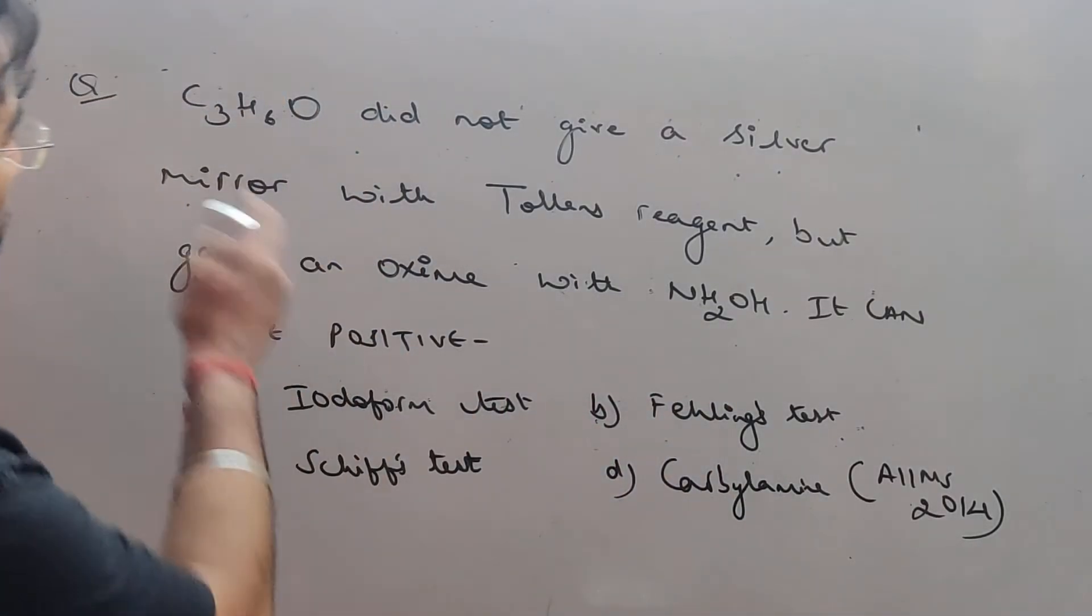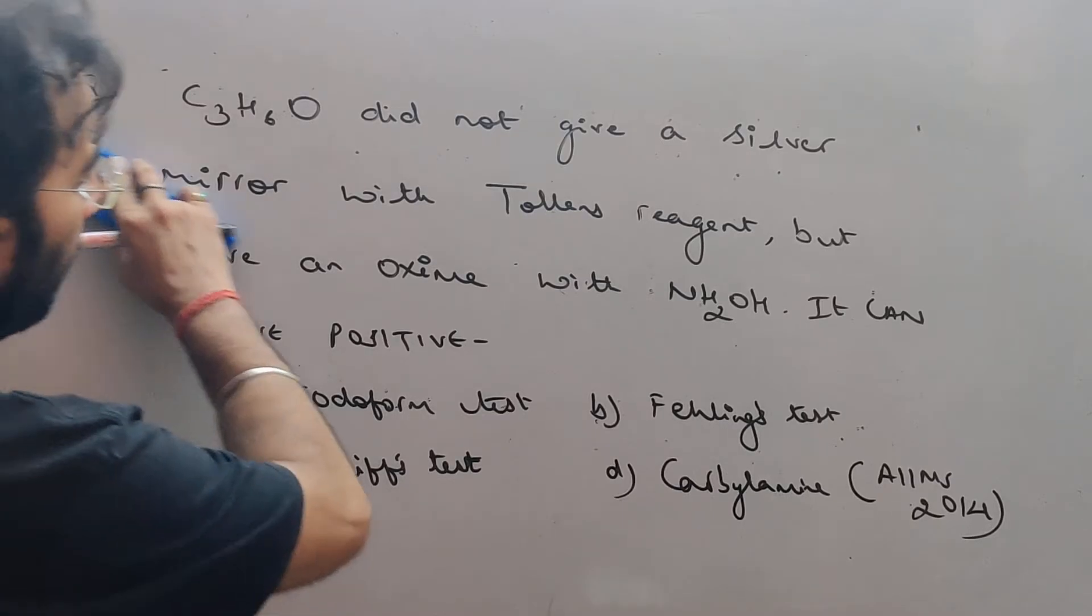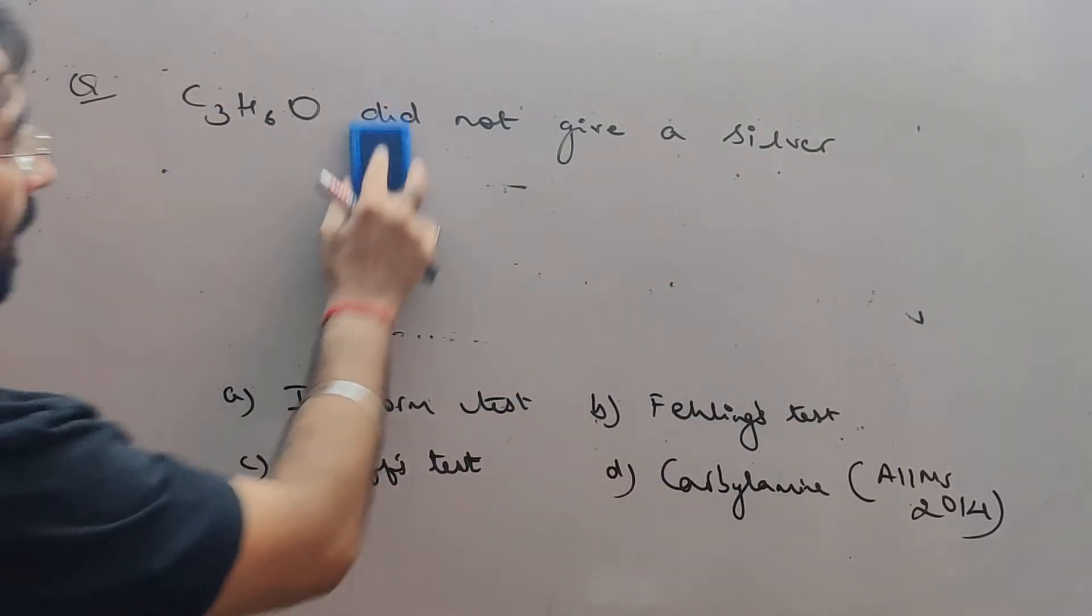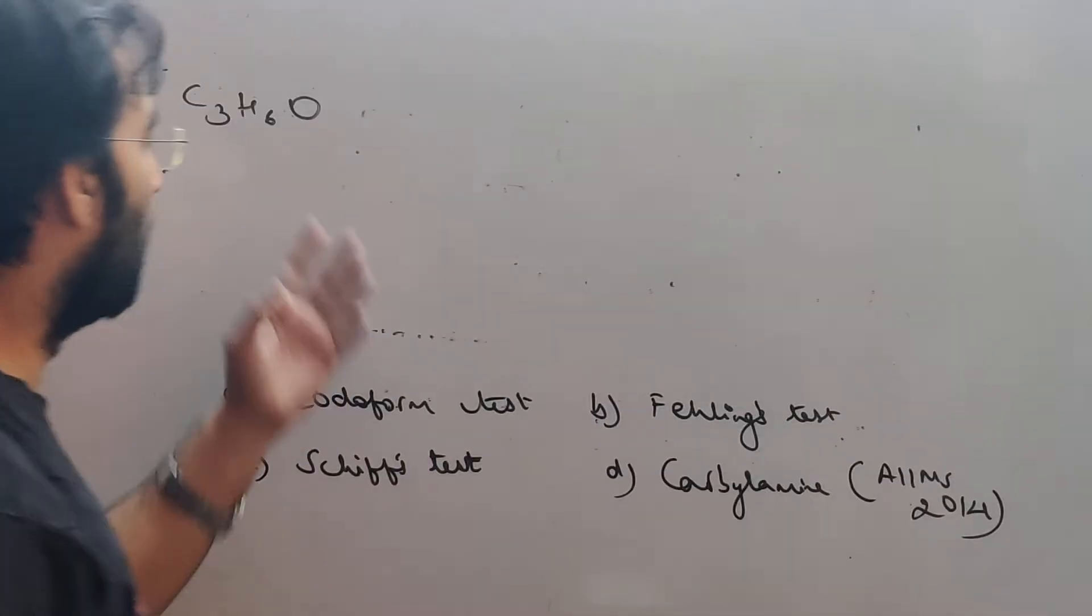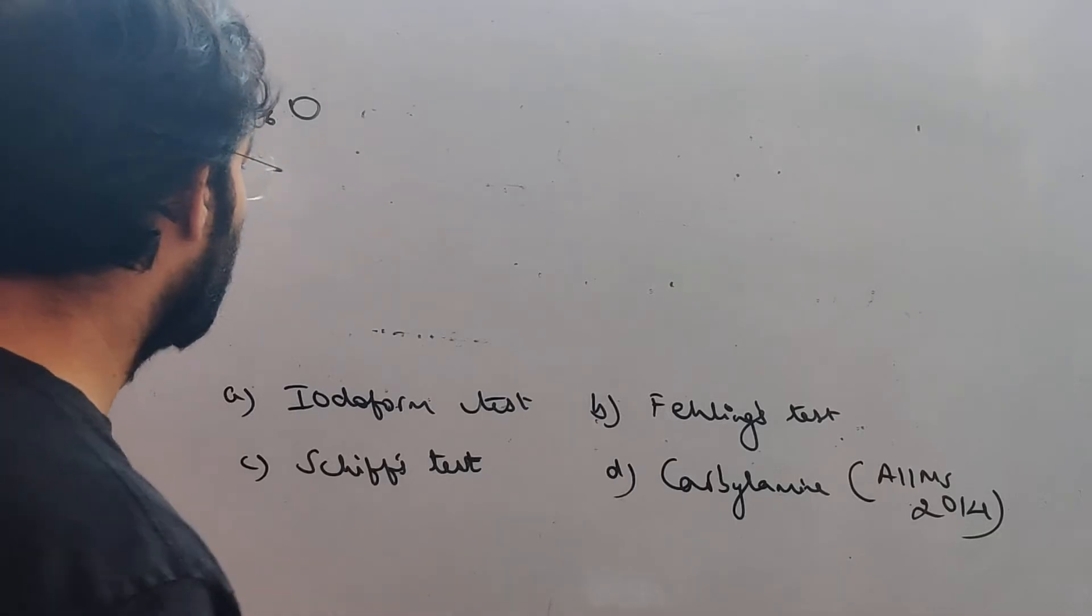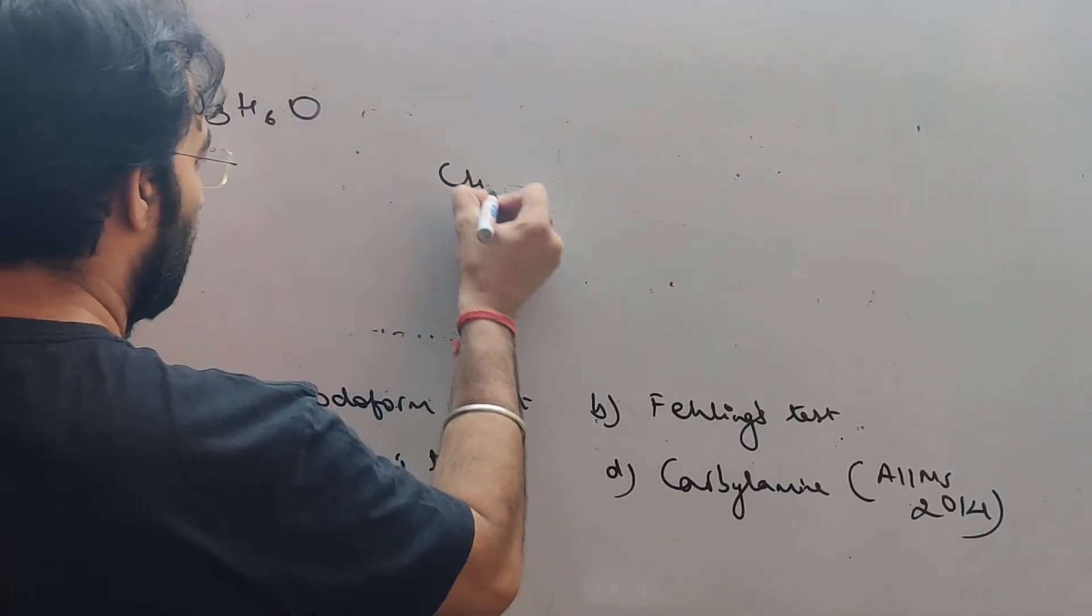Now look at how many ketones and the molecular formula is given. There are 3 carbons. And I have a hint that this ketone is now 3 carbon ketones. 3 carbon ketone is nothing but acetone.